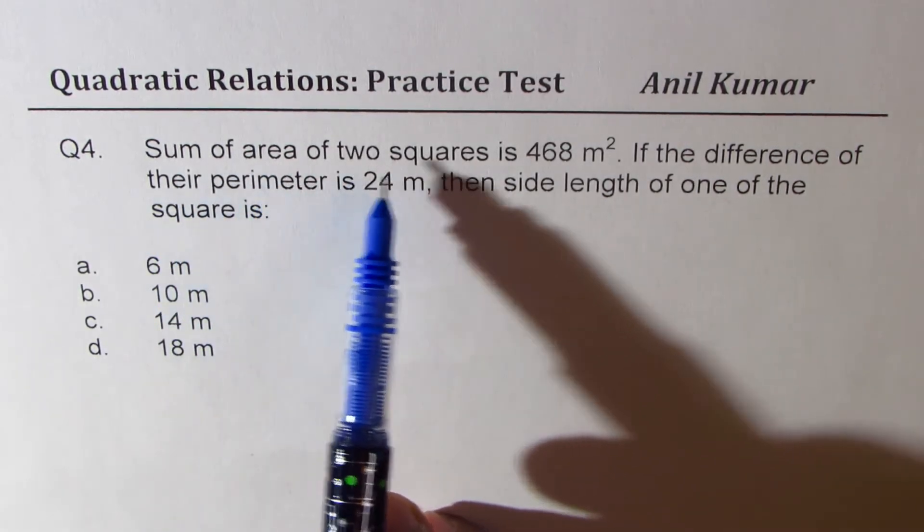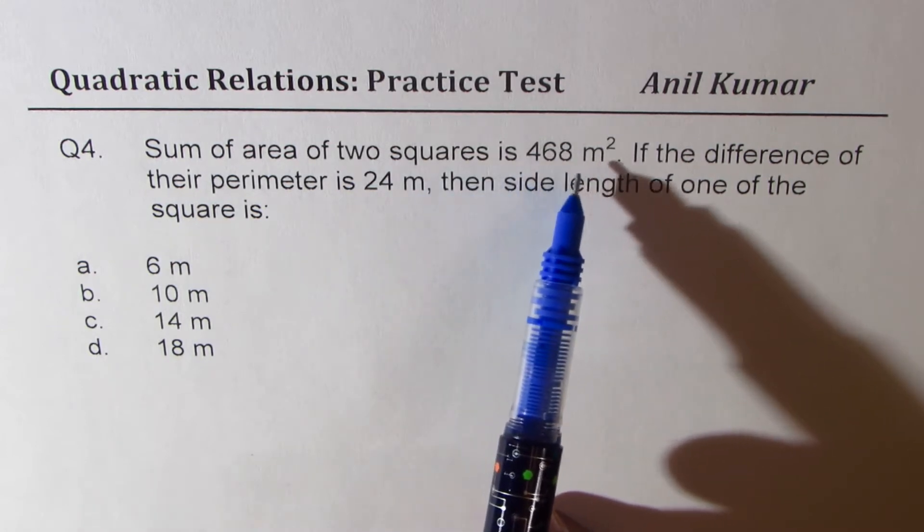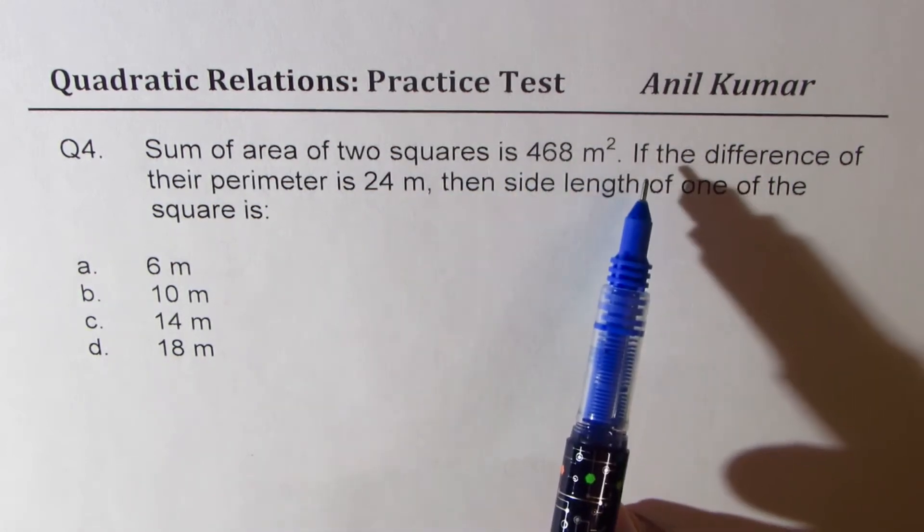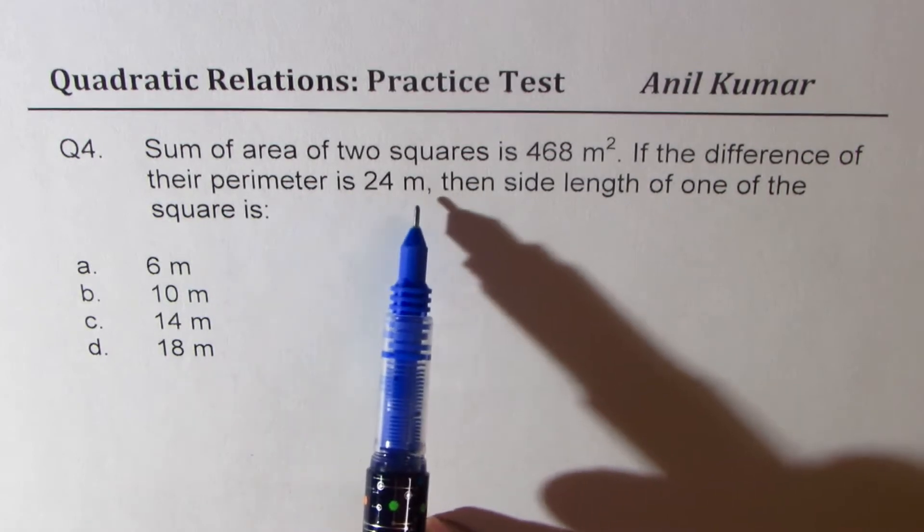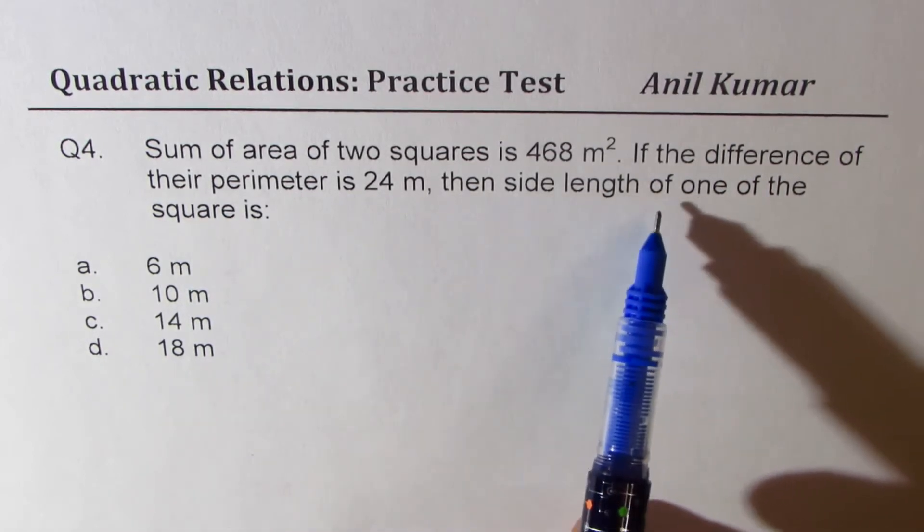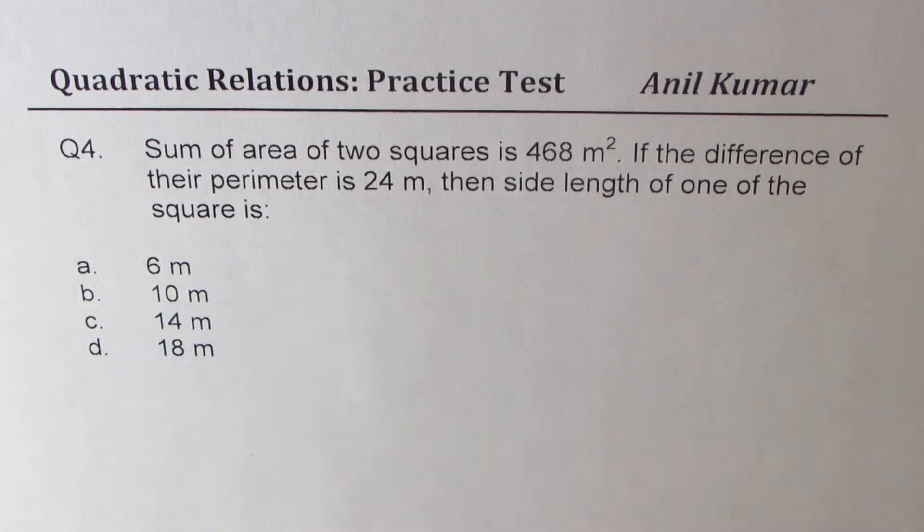Sum of areas of two squares is 468 meter square. If difference of their perimeter is 24, then side length of one of the squares is what?